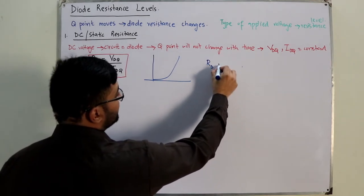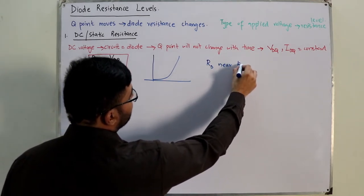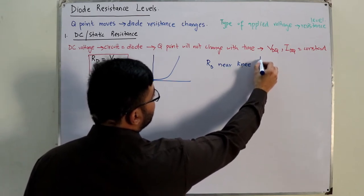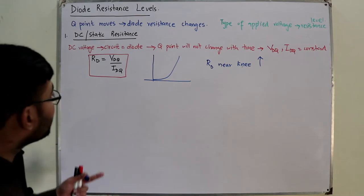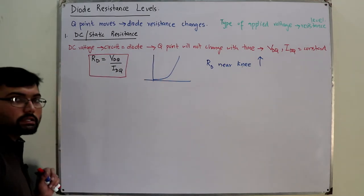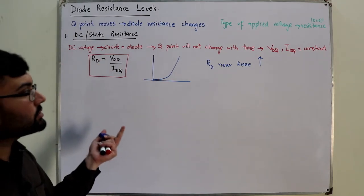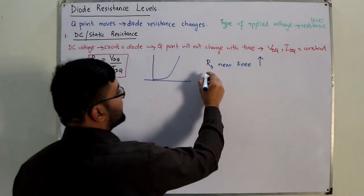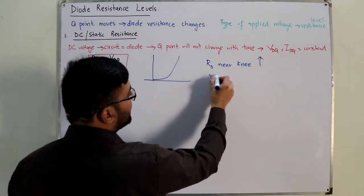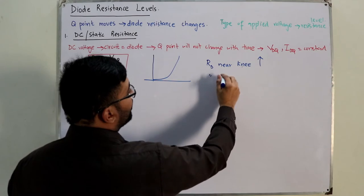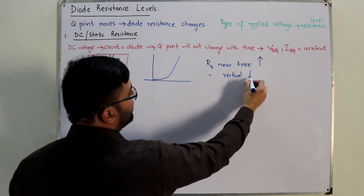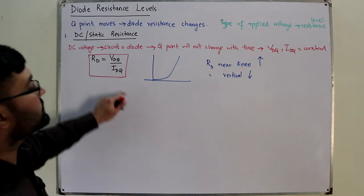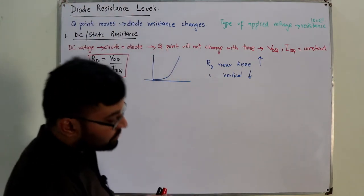Rd near knee or below the knee is higher, and that is obvious. Why? Because the current is lower in this case, so it's inversely proportional to current. And in the vertical rise section, Rd near the vertical section is low because we have a higher current, so Rd is of course low.